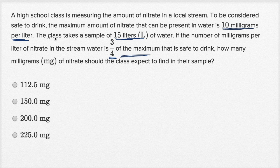The maximum amount of nitrate that can be present in water is 10 milligrams per liter. So what the class finds is that their sample has 3/4 of this maximum value. So what's 3/4 of 10 milligrams per liter? Let's just write that down.